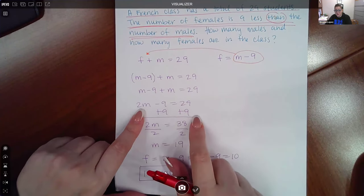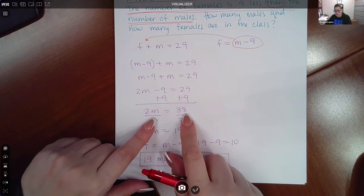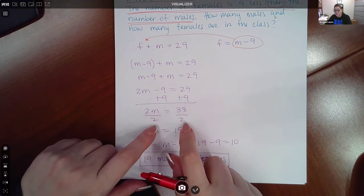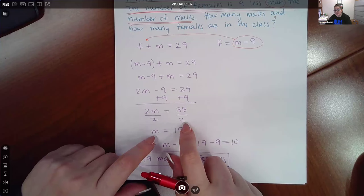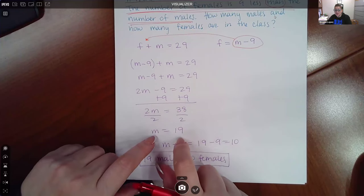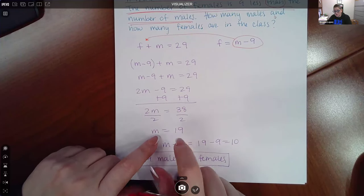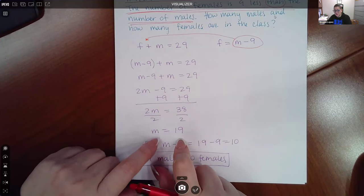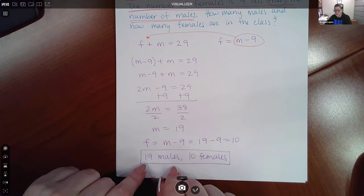So I added 9 to both sides. I ended up with the equation 2M equal to 38. And then I divided both sides by 2 to get the M all by itself, resulting in M equals 19. So now we know that the number of males is 19.